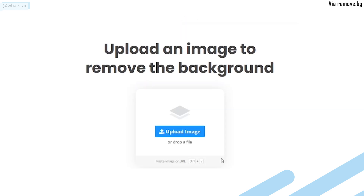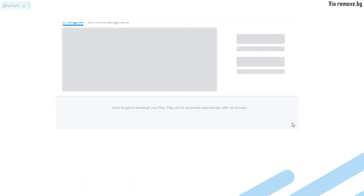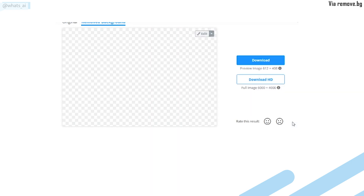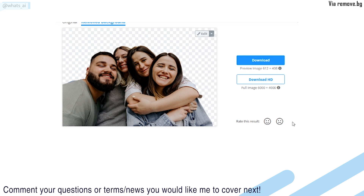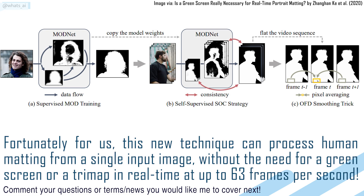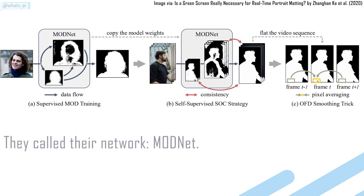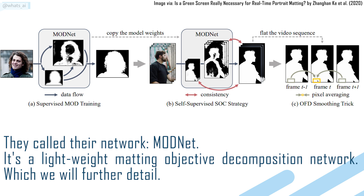The current state-of-the-art approaches are quite accurate, but they need a few seconds and sometimes up to minutes to find results for a single image — you can just imagine the time needed to process a whole video. Fortunately, this new technique can process human matting from a single input image without the need for a green screen or a trimap, in real time at up to 63 frames per second. They call their network ModNet — a lightweight Matting Objective Decomposition Network.